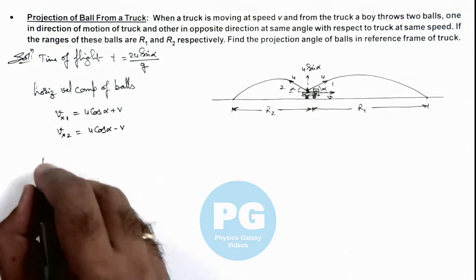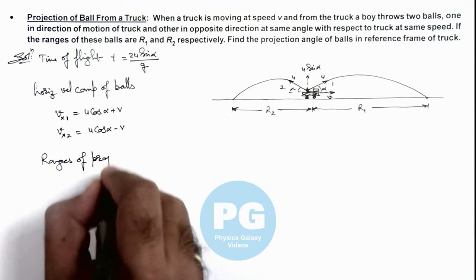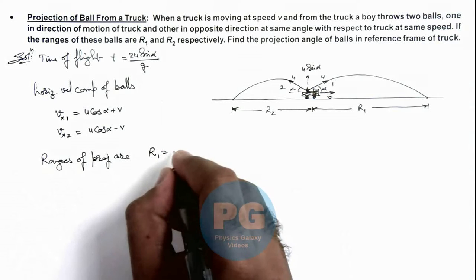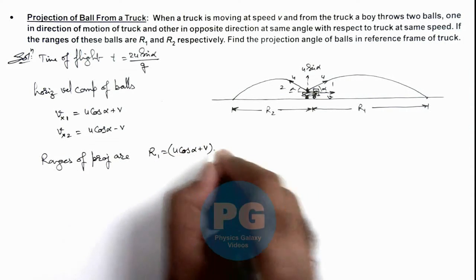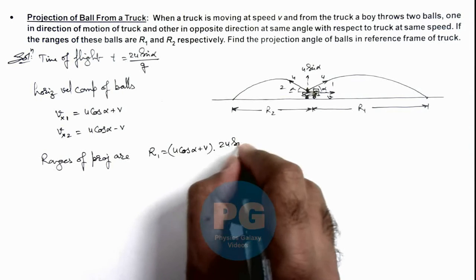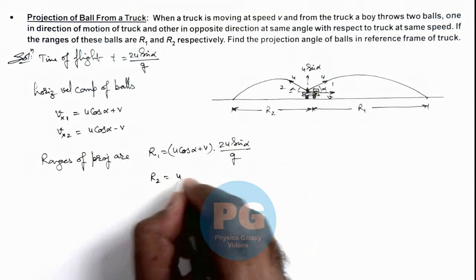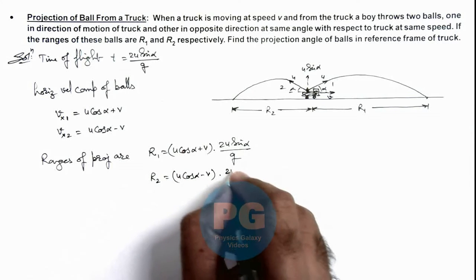So here we can write the ranges of projectile are: r1 is equal to u cos alpha plus v multiplied by 2u sine alpha by g, and r2 we can write u cos alpha minus v multiplied by the time of flight that is 2u sine alpha by g.